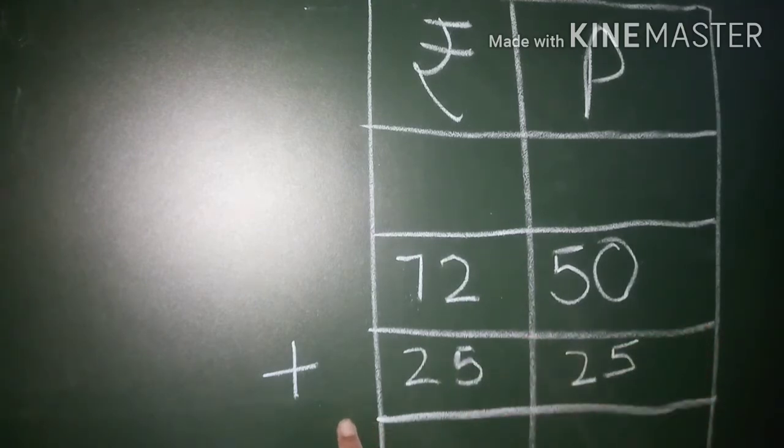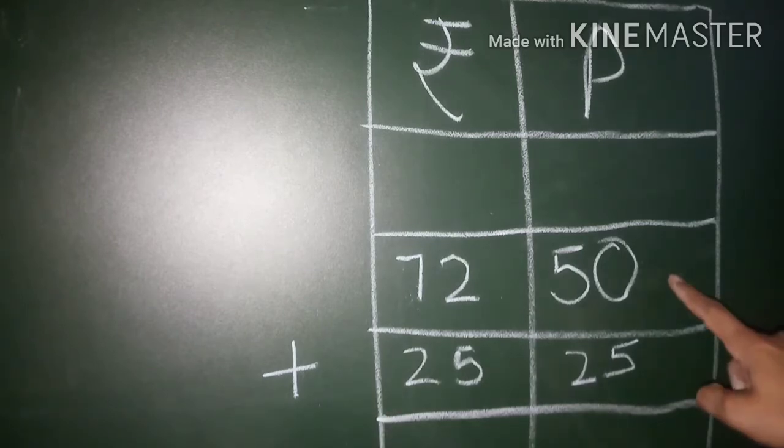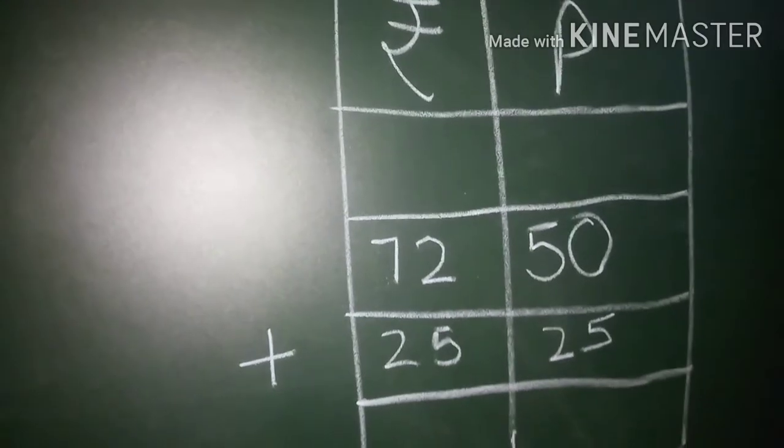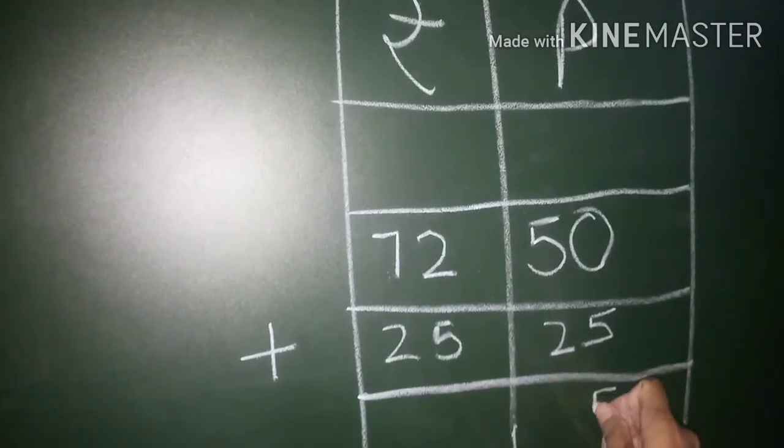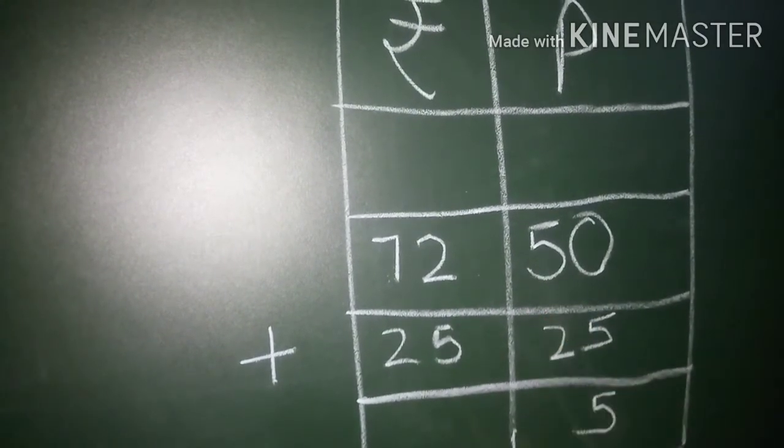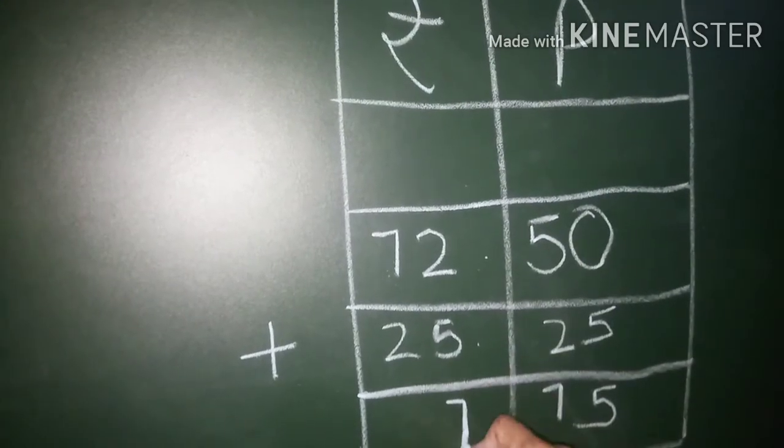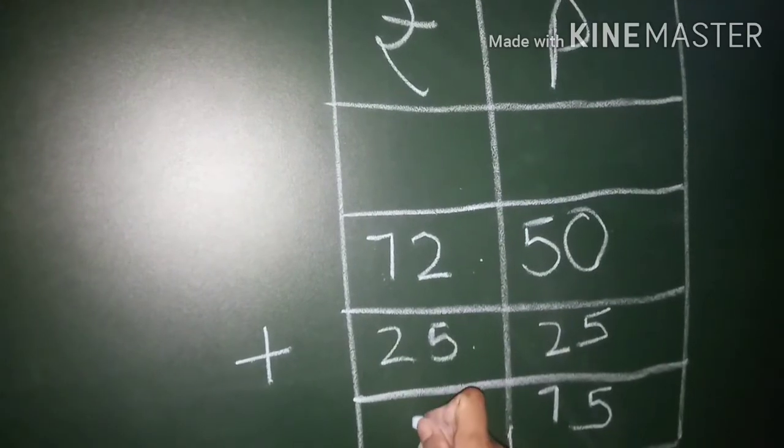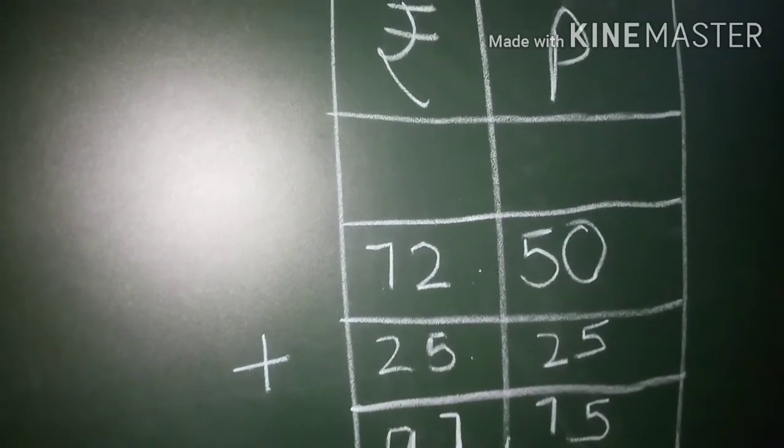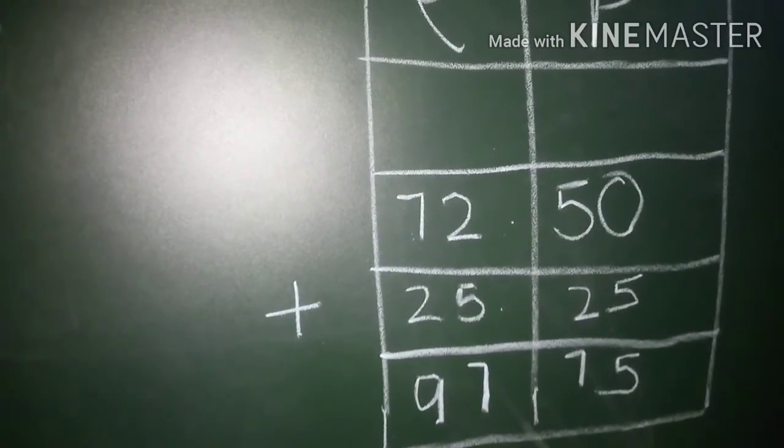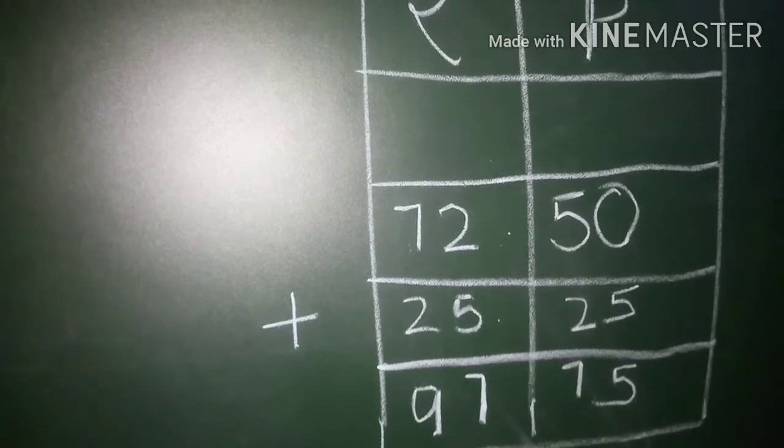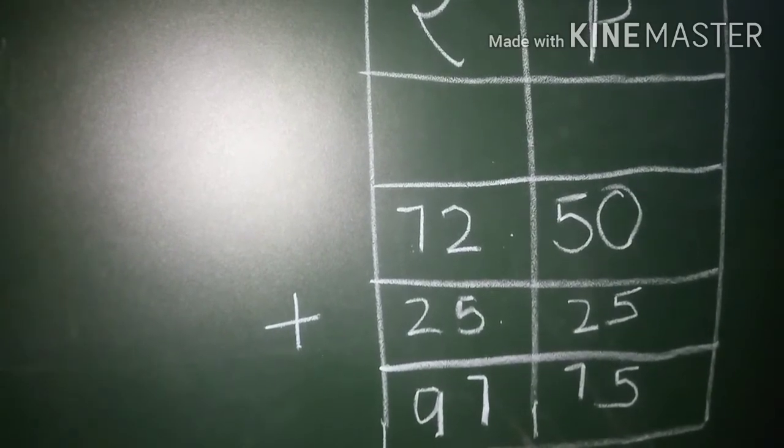First, 72 rupees and 50 paise. And 25 rupees and 25 paise. We will add. Start. 5 plus 0 is 5. And 5 plus 2 is 7. Again 5 plus 2 is 7. And 7 plus 2 is 9. Means Mani has 97 rupees and 75 paise.